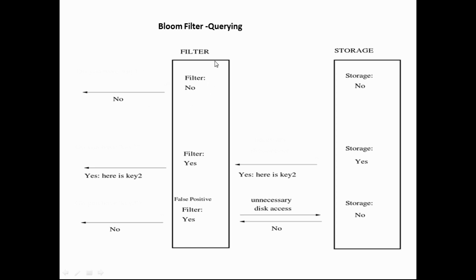This is the block diagram for Bloom filter querying and storing. After storing, when a key element comes through the stream, the filter checks whether the key value is in storage using the hash functions. If the hash functions indicate the key is not in storage, it replies no. If the filter determines the key is in storage, it retrieves the element. However, sometimes the filter gives a false positive — the key is not actually in storage — leading to unnecessary disk access.